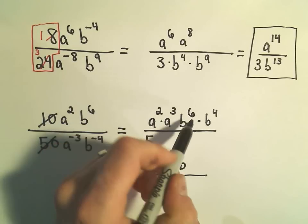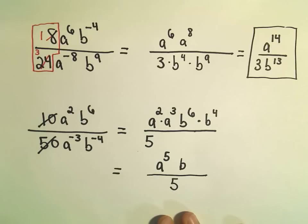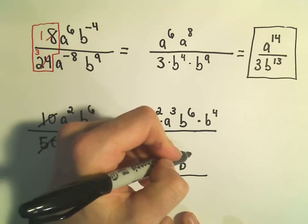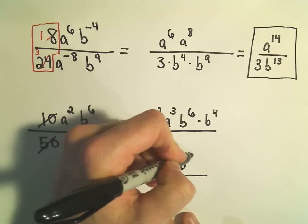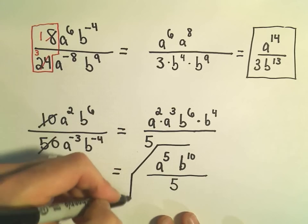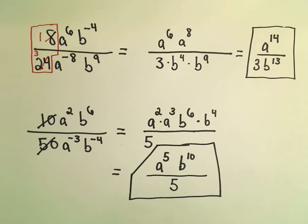And then we do the same thing with our b's. So b to the 6th times b to the 4th. We can just add those exponents and get a b to the 10th power. And again, that would be considered simplified for the 2nd example.